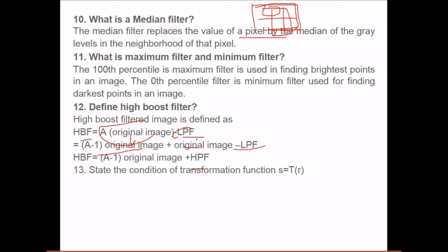State the condition of transformation function S = T(R). T(R) is a single valued and monotonically increasing in this interval. This is the condition.